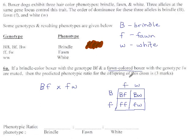And if we count up phenotypes, anything with big B is brindle. So we're going to get 2 out of 4 or 50% brindle. FF is fawn, FW is also fawn, so we're going to get 2 out of 4 fawn, no white dogs today.